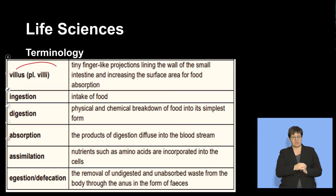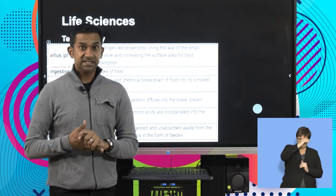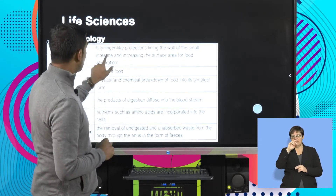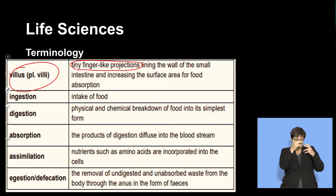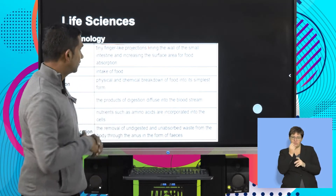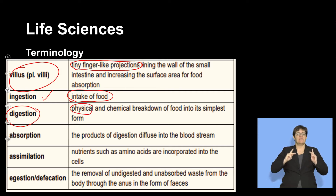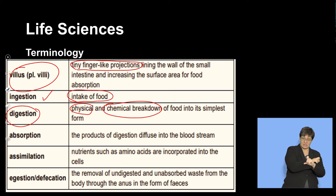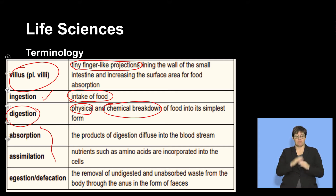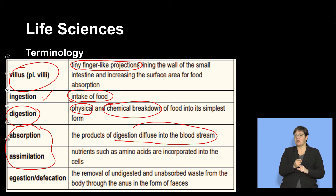Villi are folds of tissue on the inside of the small intestine — finger-like projections that stick out from the tube into the internal lumen. Ingestion is where food is taken into the mouth. Digestion refers to the physical and chemical breakdown of food from complex molecules into simple monomers. Absorption is what happens after chemical digestion — the products diffuse into or are absorbed into the blood system.